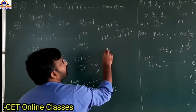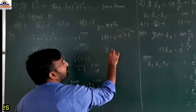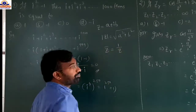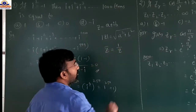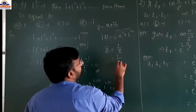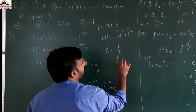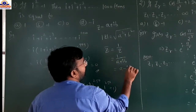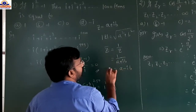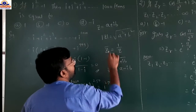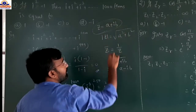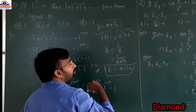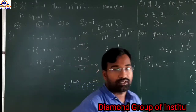Next, z-bar. z-bar is nothing but 1 by z, which is 1 by (a plus ib). This value simplifies to a minus ib. So if z equals a plus ib, then z-bar equals a minus ib. Remember this.